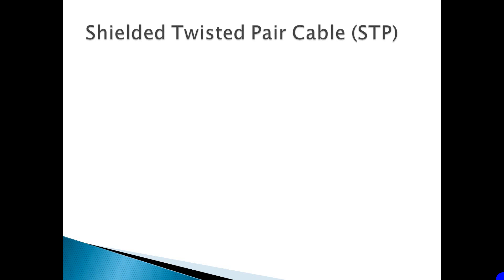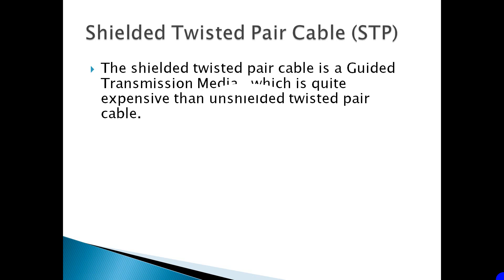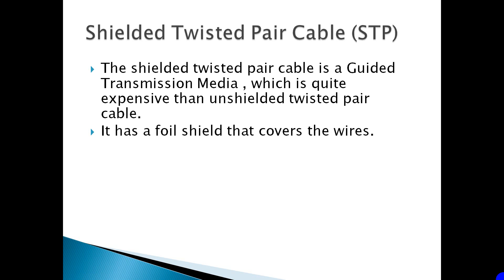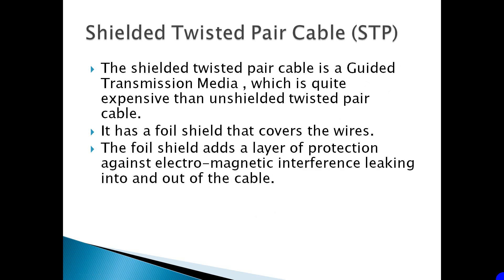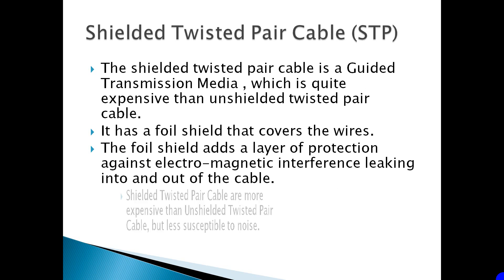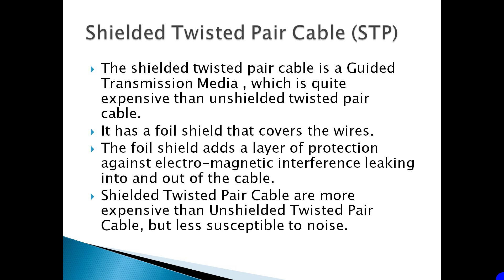Shielded Twisted Pair Cable. The shielded twisted pair cable is a guided transmission media which is quite expensive than unshielded twisted pair cable. It has a foil shield that covers the wires. The foil shield adds a layer of protection against electromagnetic interference leaking into and out of the cable. Shielded twisted pair cable is more expensive than unshielded twisted pair cable but it is less susceptible to noise.